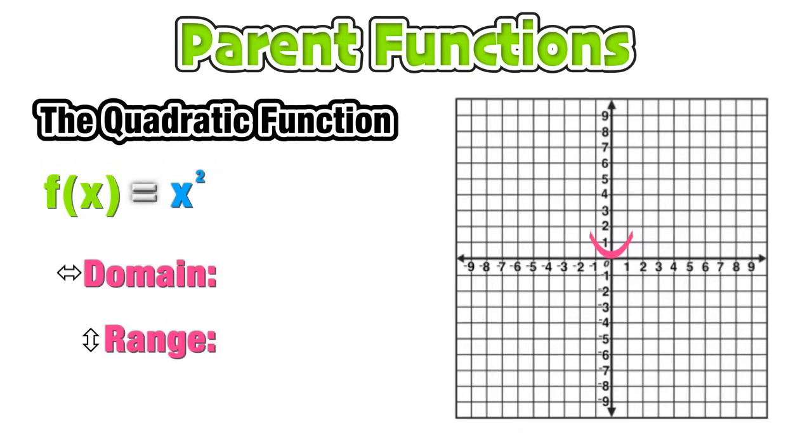The next parent function is the quadratic function, f(x) = x². This parabola should look very familiar to us. If we compare it to the absolute value function, we can clearly see that it has the same domain and range, the domain being negative infinity to positive infinity, and the range being from 0 to infinity.